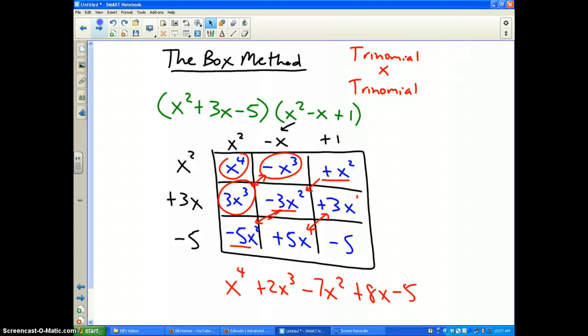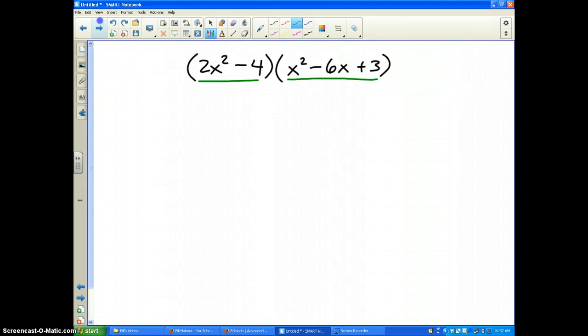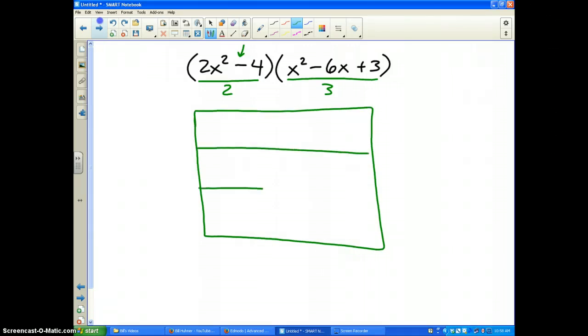Now I'm going to show you one more example in case you prefer the box method. Now if you notice this particular example, which I'm not actually going to work out for you, but I'm just going to show you for the sake of time. This has two terms. This has three terms. But the problem is, the first one is missing its x term. It has 2x² and no x's.